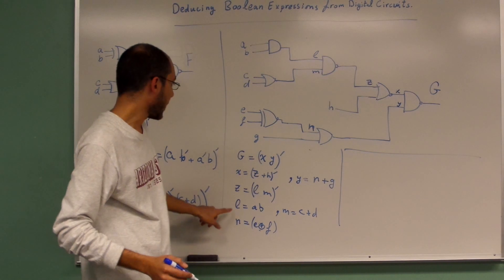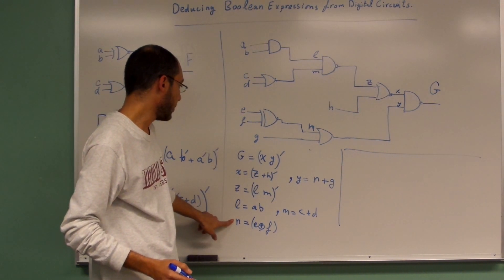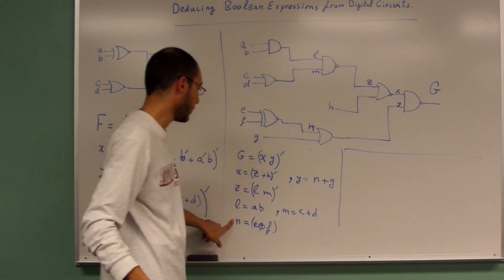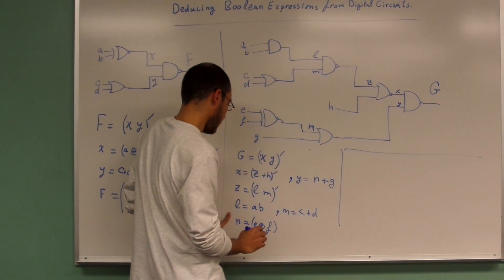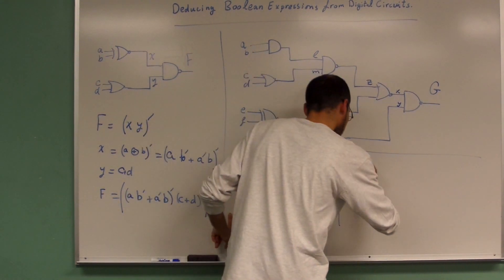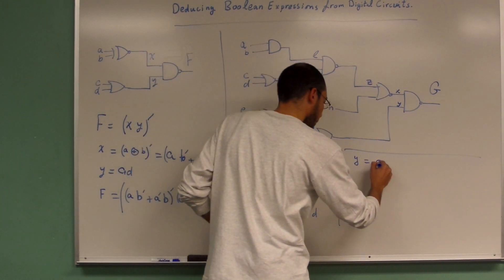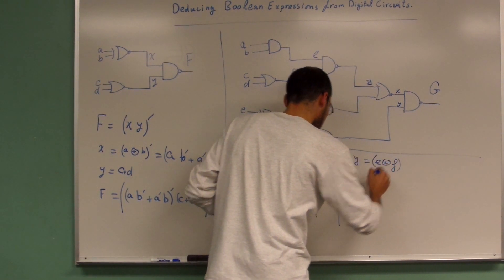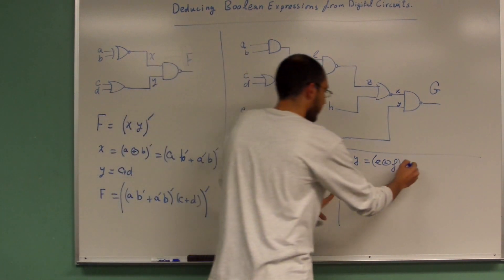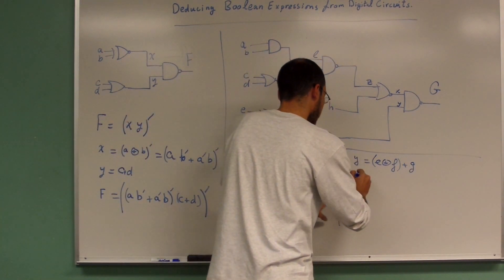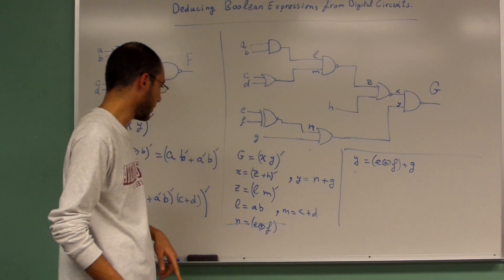Let's have a look at N. The N should be substituted into Y. So remember that Y equals E XOR F, which is E F bar plus E bar F plus N. And then we cancel the N because we do not need it anymore.